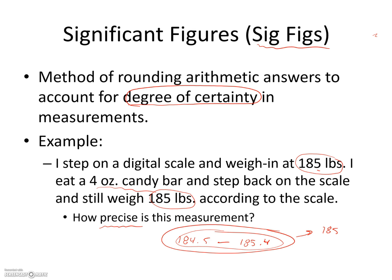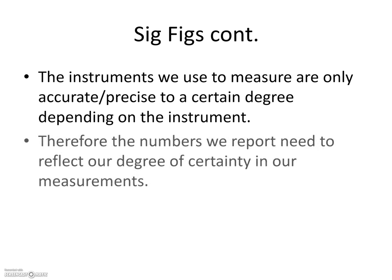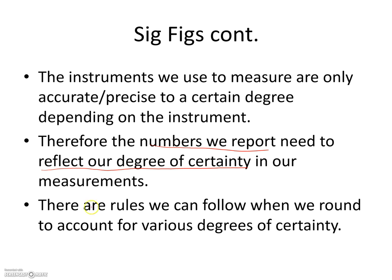This is why we use significant figures — to reflect how accurate a measurement is. I wouldn't report my weight as 185.0 because I don't actually know that digit unless the scale tells me. The instruments we use are only precise to a certain degree, so the numbers we report need to reflect our degree of certainty. If we report digits we aren't certain of, we're essentially telling whoever reads our work that we knew those digits when we actually didn't.